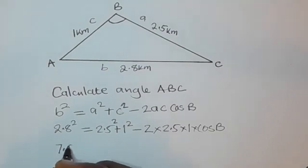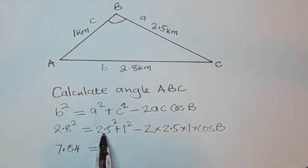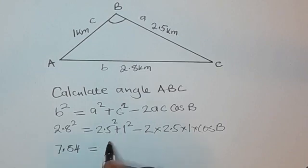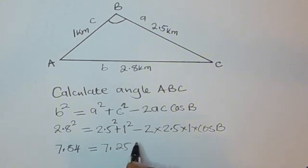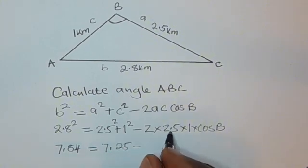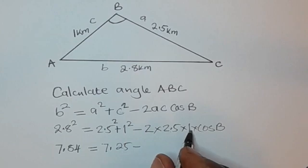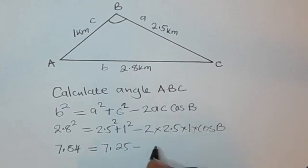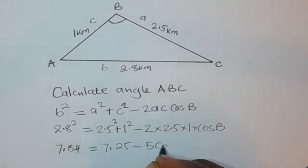When you square these on a calculator, you get 7.84 equals 7.25 minus 5 cos B. That's because 2.5 squared plus 1 squared gives 7.25, and 2 times 2.5 times 1 gives 5.